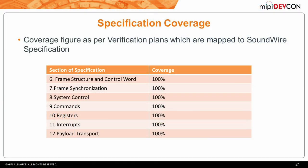Our test suite also provides a verification plan mapped to the specification sections. What that means is: if you have a coverage hole—say you're at 90%—you can back-annotate the verification plan from actual regression data, see which area is lacking, and focus more test cases on that area.